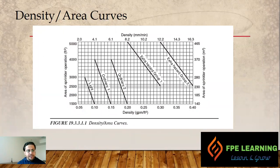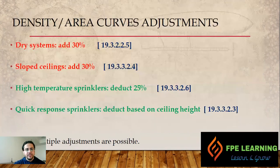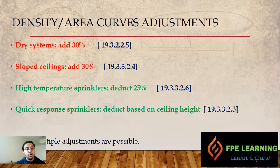Now let's begin with design approach Part 2. As we discussed in the previous class, we covered the density-area curve, the pipe schedule method, the hydraulic calculation method, and various rules and regulations as per NFPA 13 Chapter 19. Today I'm going to talk about the density-area adjustment curve — specifically how we add or reduce design areas based on different scenarios.